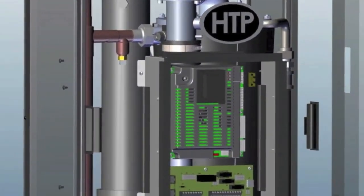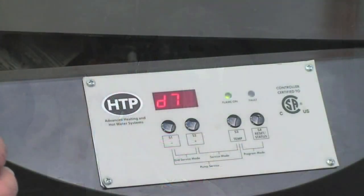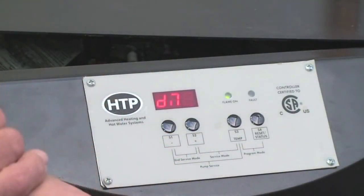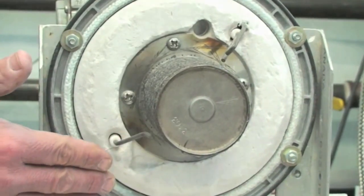If the controller and the gas valve appear to be okay, then toggle through the display to see what the flame current is reading. If you have a reading above 0.8 microamps of flame current, then check the refractory inside the appliance.